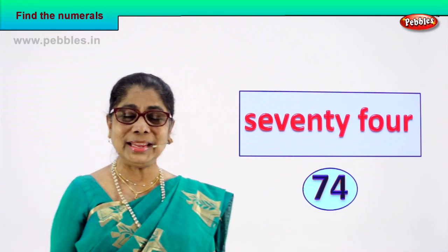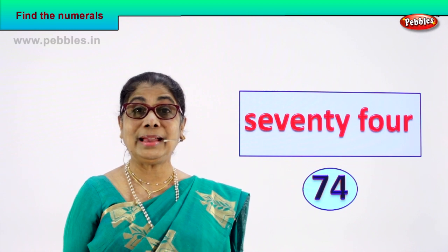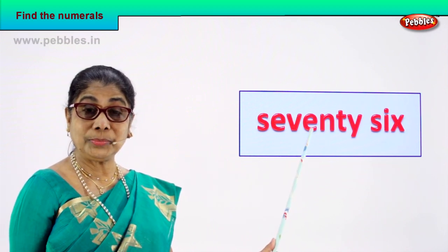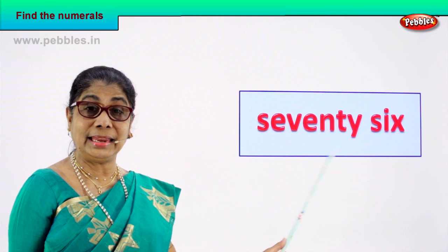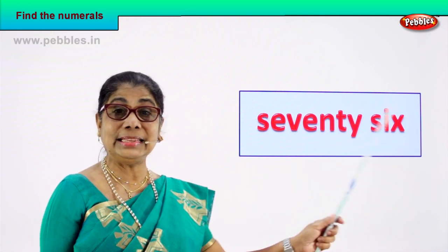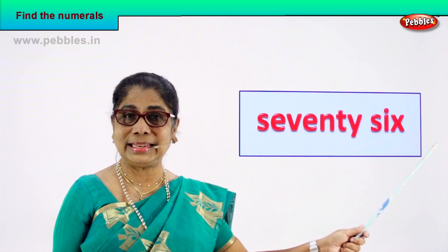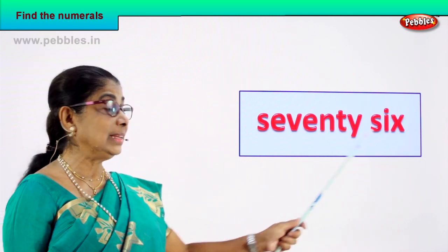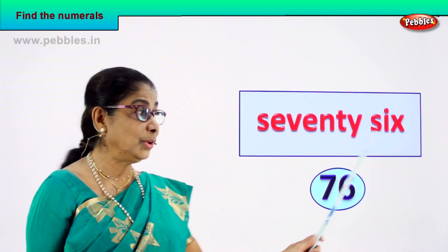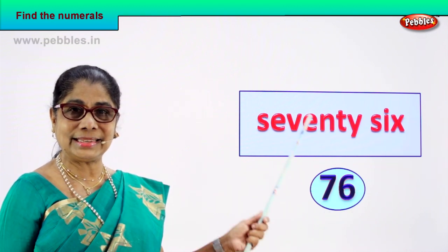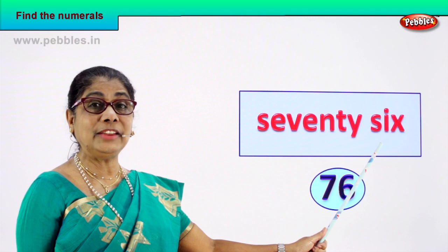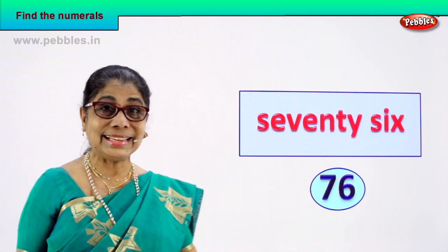Here is the numeral, here is the name. Shall we take our next number name? S-E-V-E-N-T-Y, 70. S-I-X, 6. Seventy-six, 76. Seven and six — seventy-six. Very good. So we identify and write the numeral 76.